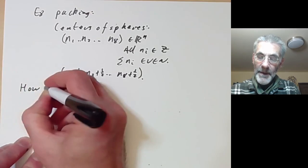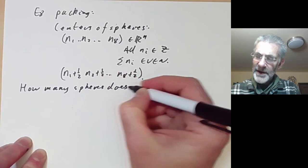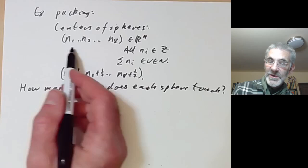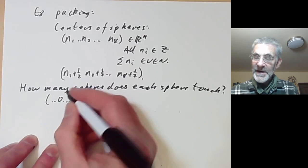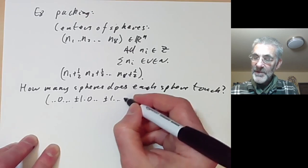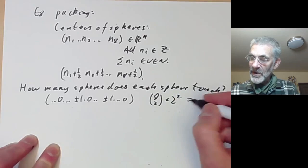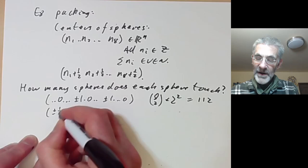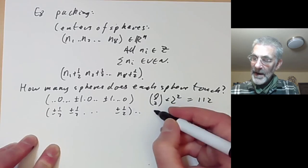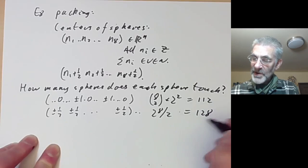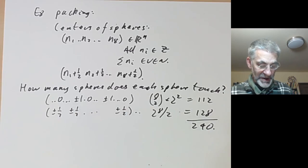But there's enough room to add another bunch of spheres: we can take all things with (n1 + 1/2, n2 + 1/2, ..., n8 + 1/2), again with all ni integers and the sum even. For example, we can ask how many spheres each sphere touches. The spheres closest to the origin have distance root 2, and there are two sorts: those with all zeros except two entries of ±1 (giving 112 vectors), and those with entries ±1/2 with even sign count (giving 128). Adding them up, there are 240 spheres touching each sphere.